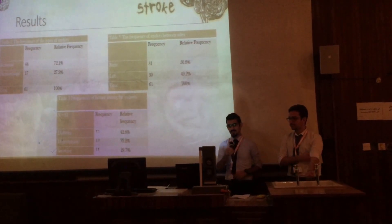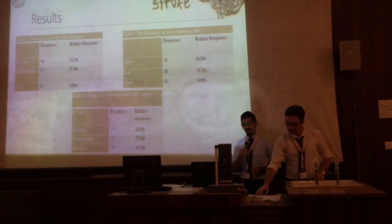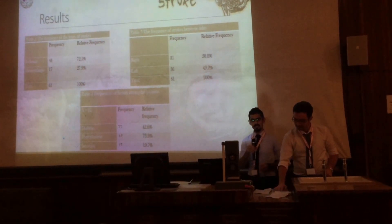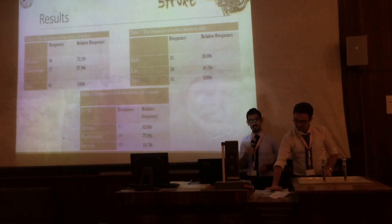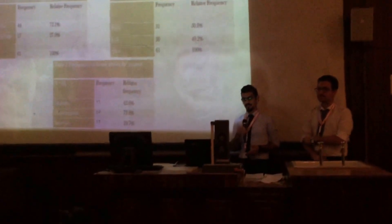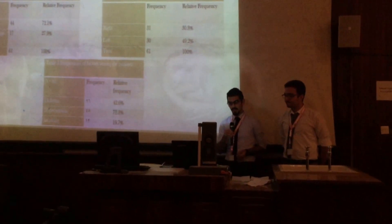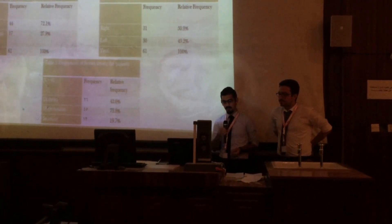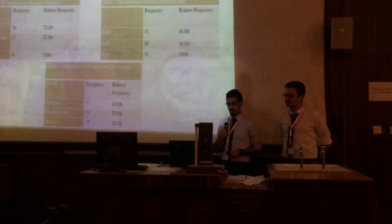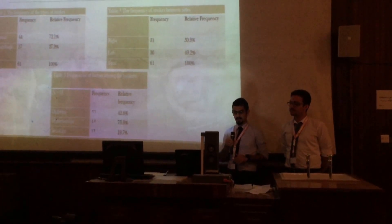The study includes 61 patients, 27 males and 34 females. The mean age for these patients was 65 years. Most patients had multiple risk factors like diabetes, smoking, and hypertension, but only 7 patients of the 61 didn't have any of these risk factors. 44 patients had an ischemic stroke and 17 had a hemorrhagic stroke; 31 had a right hemispheric stroke and 30 had a left hemispheric stroke.